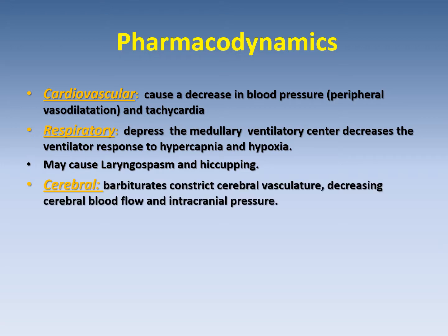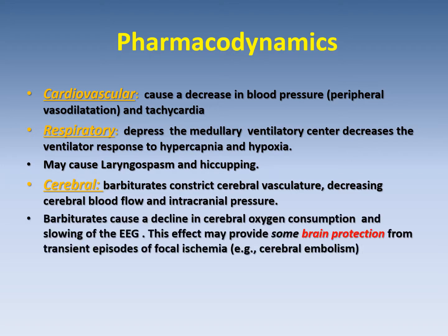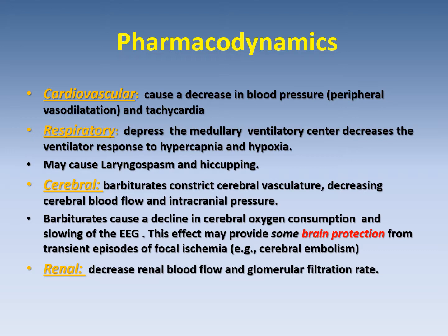Cerebrally, barbiturates constrict the cerebral vasculature, decreasing cerebral blood flow and intracranial pressure. Barbiturates also cause a decline in cerebral oxygen consumption and slowing of the EEG. This effect may provide some brain protection from transient episodes of focal ischemia, for example cerebral embolism. Regarding renal effect, it decreases renal blood flow and the glomerular filtration rate. Hepatic blood flow is also decreased.